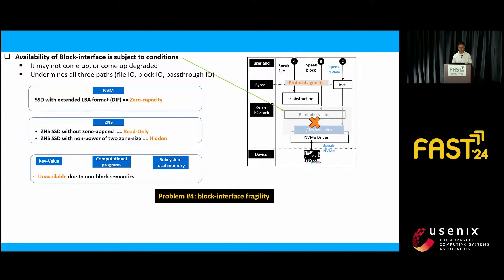Looking at the three parts — file IO, block IO, and pass-through IO — they all rely on the block device interface, which is itself subject to various conditions. For example, if we take the NVMe command set for SSD with extended LBA format, the block device comes up with zero capacity, so you cannot do any file IO. A ZNS SSD without zone append will appear as a read-only block device, and without power-of-two zone size it would be marked hidden. For other command sets like key-value, which have non-block semantics, the block interface cannot be available at all. So we have this problem of block interface fragility.